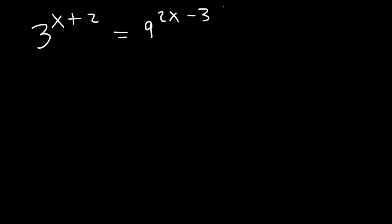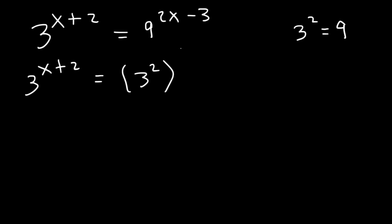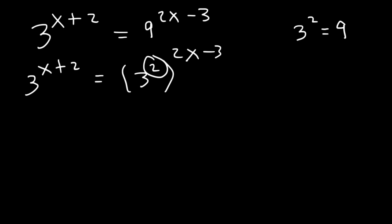What you need to do is change base 9 into base 3. Since 3 squared is equal to 9, we can replace 9 with 3 squared. Whenever you raise one exponent to another exponent, you need to multiply. So we multiply 2 by 2x minus 3, giving us 3 raised to the 4x minus 6 on the right side.